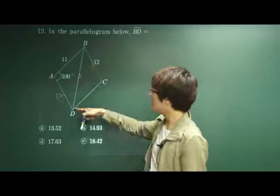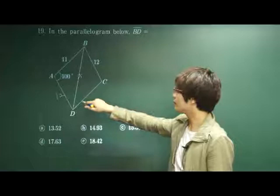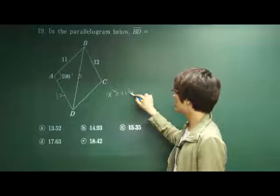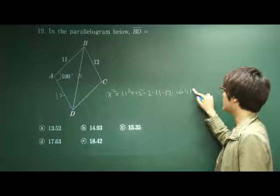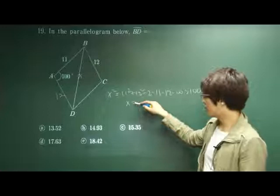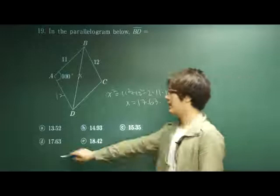Therefore, the only law which we can use is what is it? Law of cosine. So x squared is equal to 11 squared plus 12 squared minus 2 times 11 times 12 times cosine 100 degrees. Solve this and x is equal to 17.63. So among our answer choices, d is our correct answer.